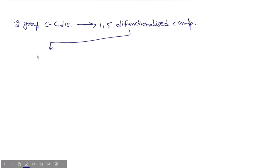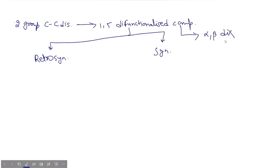In summary, for this 1,5-difunctionalized compound, we have seen its retrosynthesis and synthesis. In the 1,5-difunctionalized compound, the bond we disconnected was the alpha-beta bond — that means we disconnected from the alpha-beta carbon-carbon bond. So these are the key things you have learned from today's lecture. In retrosynthesis, we identified the synthetic equivalents, and in synthesis, we saw how the product forms.